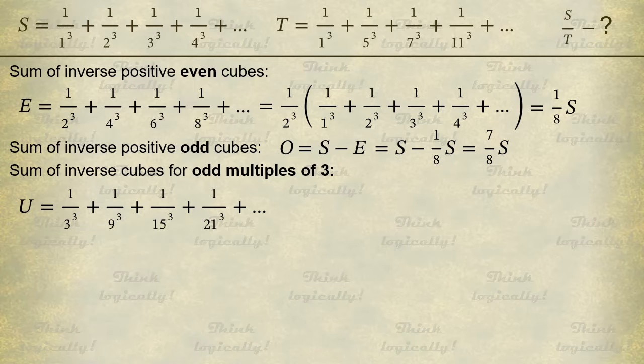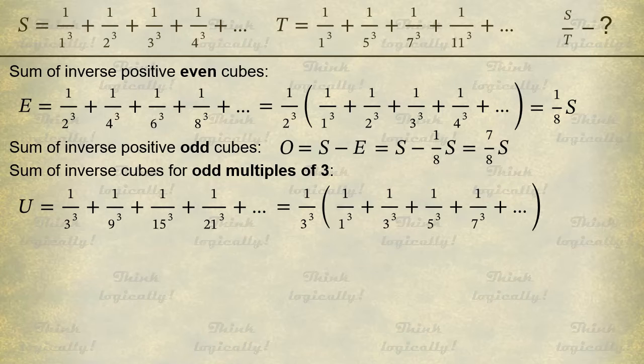This time each denominator is a multiple of 3 cubed. So we naturally factor out 1 over 3 cubed. And look what we've got in the brackets. This is the sum of inverse cubes of all odd numbers, our beloved O. While 3 cubed is another remarkable number 27.